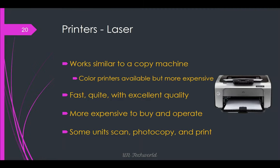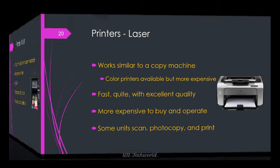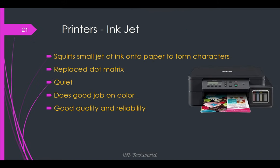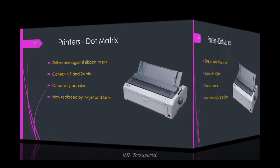Laser jet printers work similar to a copy machine. Color printers are available but more expensive. They are fast and provide excellent quality, but more expensive to buy and operate. Some units can also photocopy and print. Inkjet printers replaced dot matrix printers. They are quieter, do a good job on color, and offer good quality and reliability.